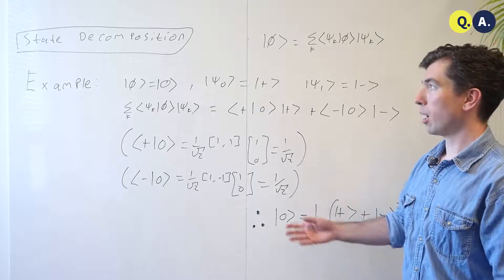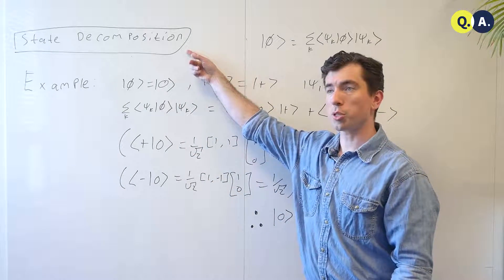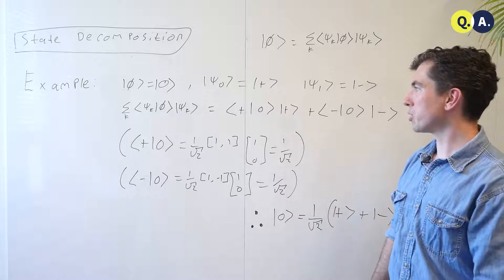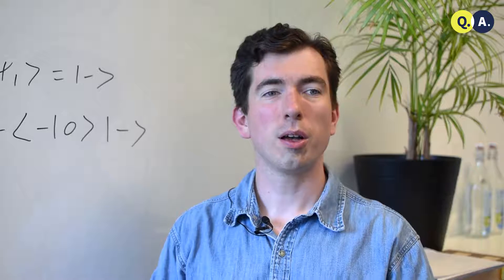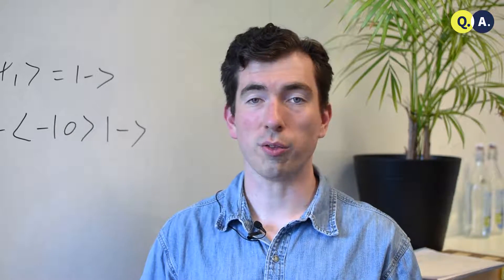Often in quantum computing, it's necessary to express one state in terms of a basis of other states. I'm going to call this state decomposition, although you can see it under a variety of names. Usually it's clear from the context that they mean expressing one state in terms of a basis that's more familiar or more convenient to you.